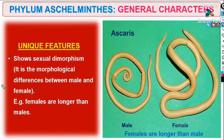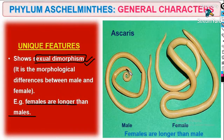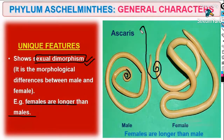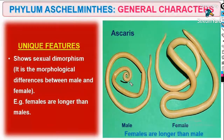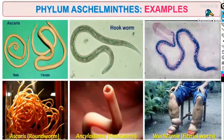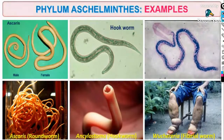They show sexual dimorphism — their sexes are separate, and females are longer than males. At the end of the female it is somewhat twisted, but in case of males the end is not twisted — you can see the curling in females but not in males. Examples: Ascaris — the roundworm; Ancylostoma — the hookworm; and Wuchereria — the filarial worm.